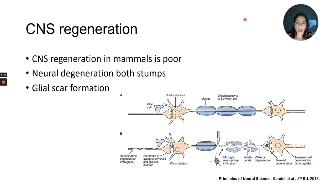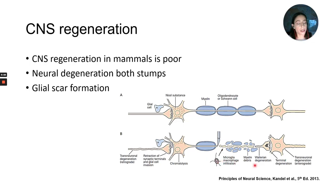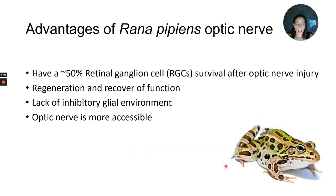One of the main problems in mammals is central nervous system regeneration — there is a lack of, or really poor, regeneration of this system. When you have a lesion, you will see both stumps end degenerating and a glial scar formation, where macrophages, microglia, astrocytes, and some other cells will come out. Therefore, we need a highly capable regenerating model to elucidate how we can make it work.